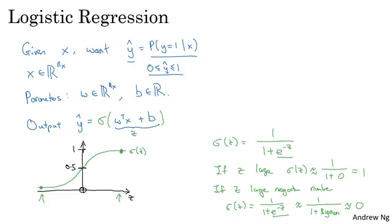So when you implement logistic regression, your job is to try to learn parameters w and b so that y hat becomes a good estimate of the chance of y being equal to 1.